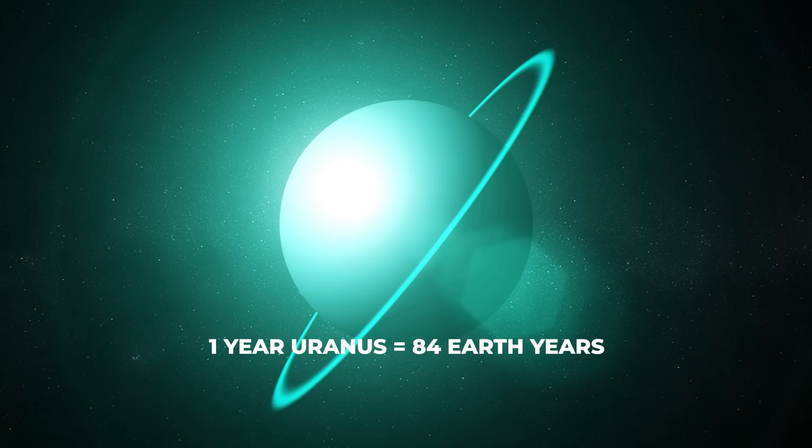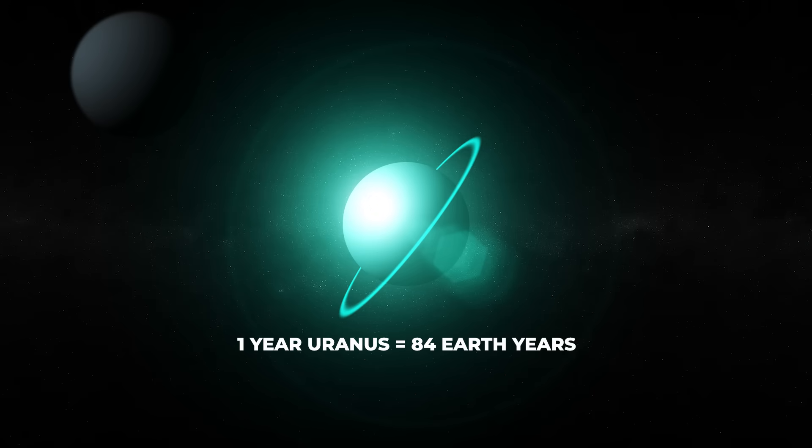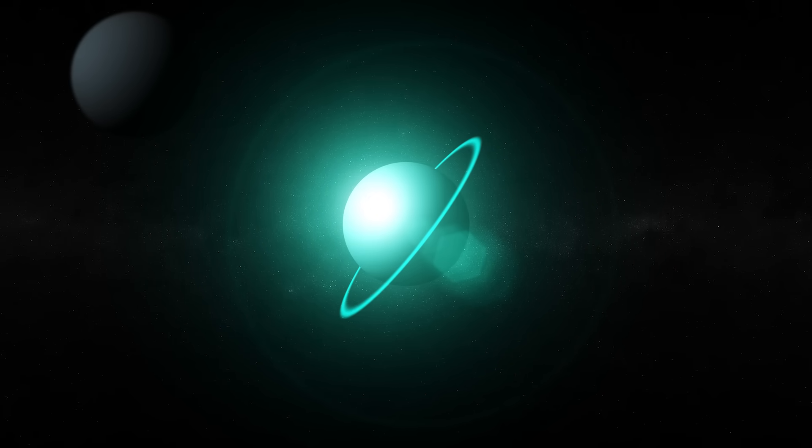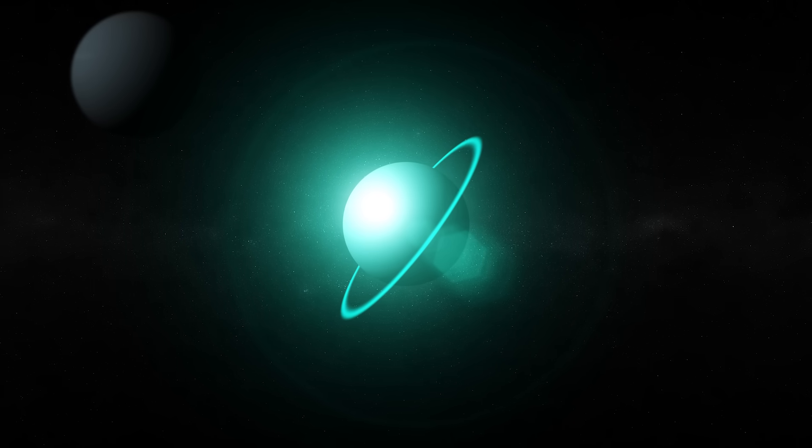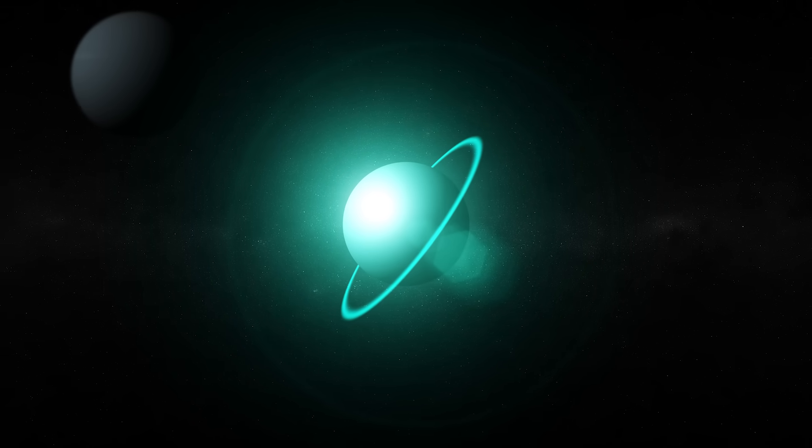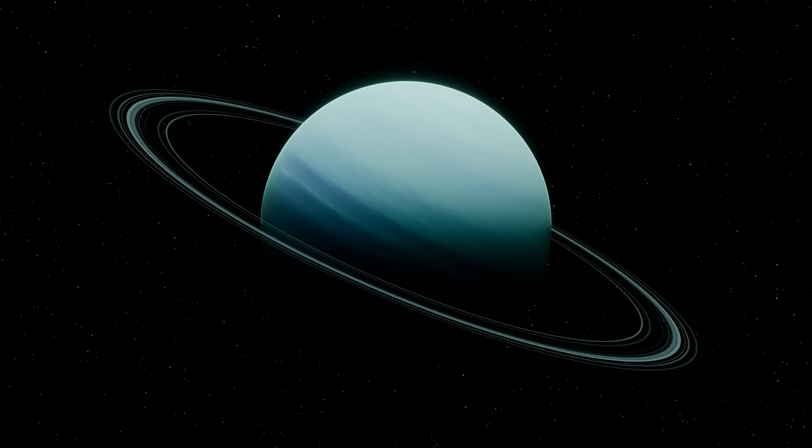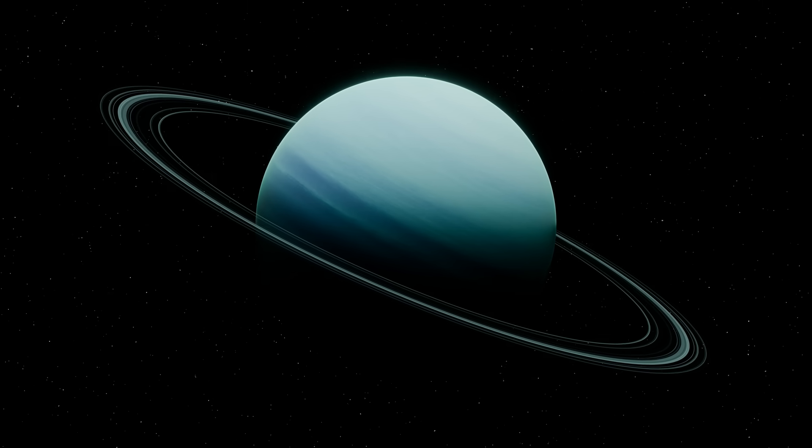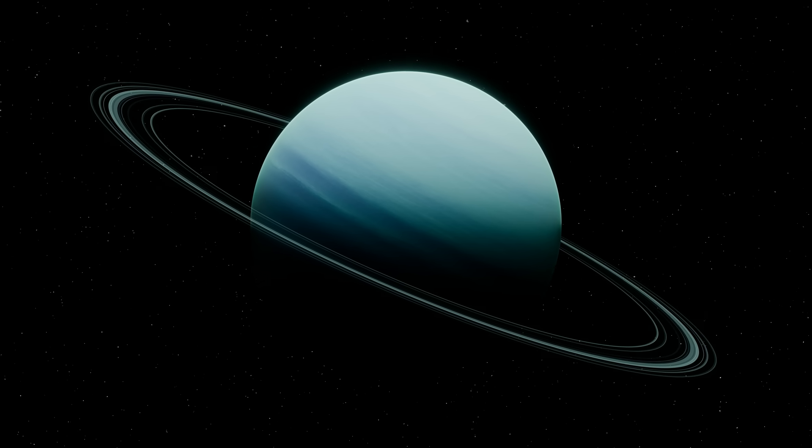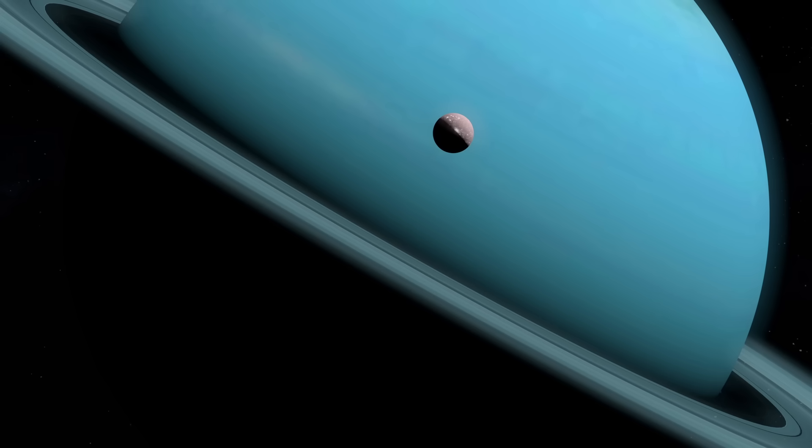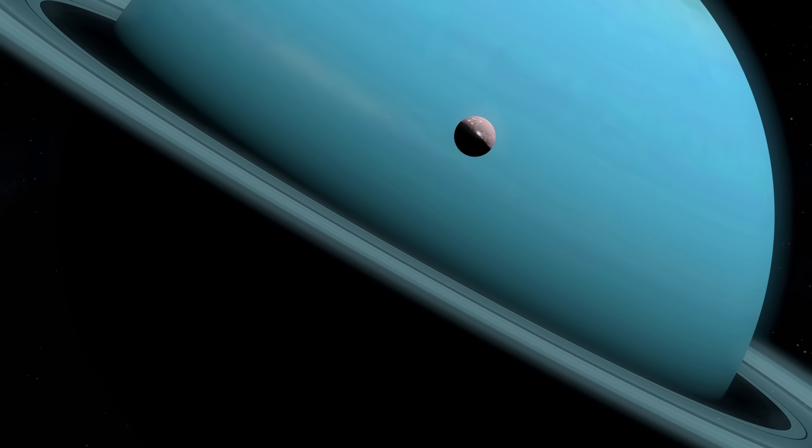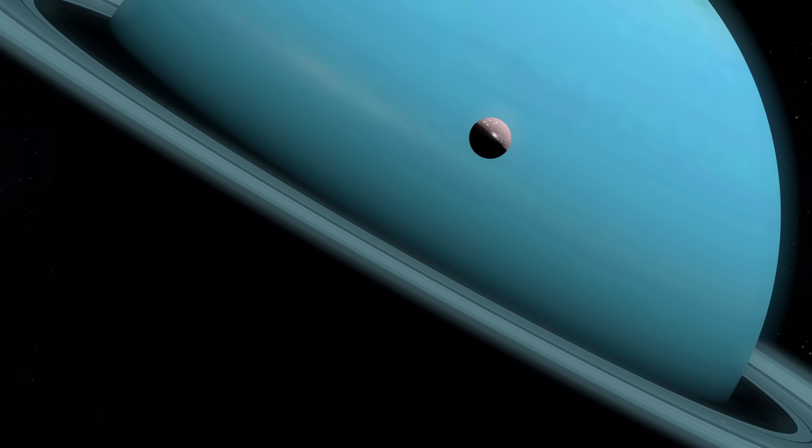One year on Uranus is equivalent to 84 Earth years, and because of its tilt, each pole experiences 42 years of sunlight followed by 42 years of darkness. When one pole points toward the Sun, it receives constant light for decades, while the other remains in shadow, frozen into a long night. As the planet moves forward in its orbit, the poles swap positions, creating unique day and night cycles.